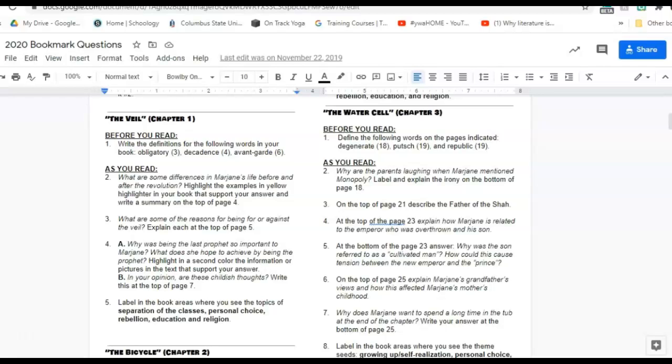As you read, you will also have annotations. So for example, what are some of the differences in Marjane's life before and after the revolution? Highlight examples in yellow highlighter in your book that support the answer and write a summary at the top of page four. For your annotation checks, if you don't have something written at the top of page four, it will not count. You will receive a zero if the annotation is not written using the correct spot.